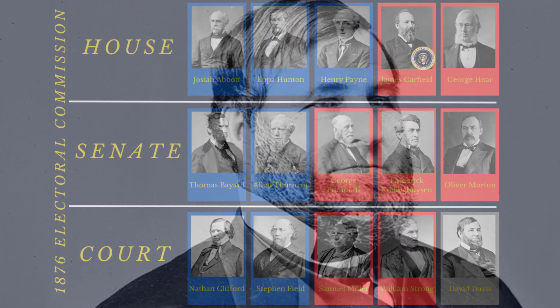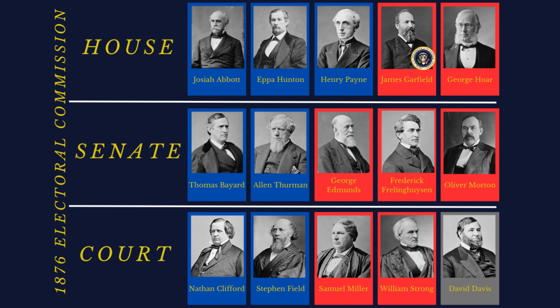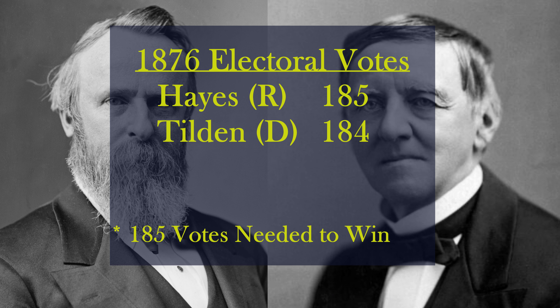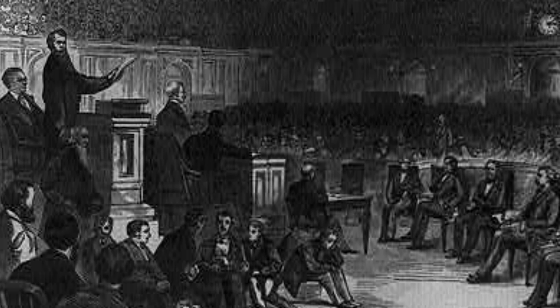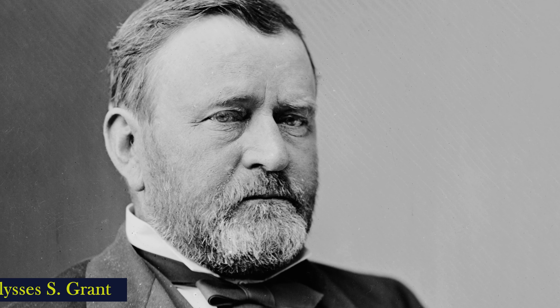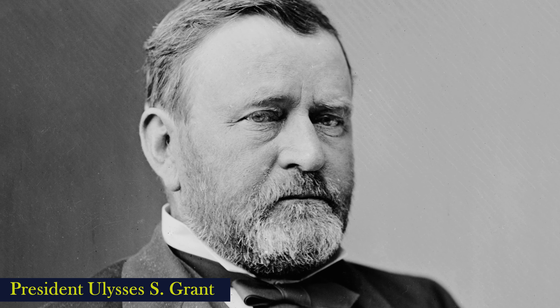They selected the Independent Justice David Davis. It is said no one, perhaps not even Davis himself, knew which presidential candidate he preferred. Just as the Electoral Commission bill was passing Congress, the Illinois legislature elected Davis to their open Senate seat, and the Democrats in the legislature believed that they had purchased Davis's support by voting for him. Had they miscalculated, as Davis promptly excused himself from the commission and resigned as a justice to take his Senate seat. Since all of the remaining available justices were Republicans, they selected Justice Joseph P. Bradley, who they considered the most impartial remaining member of the court. That selection proved decisive.